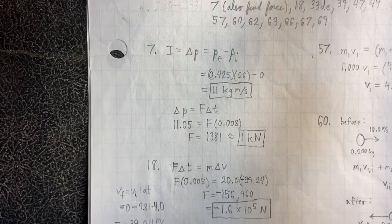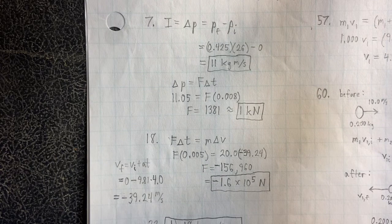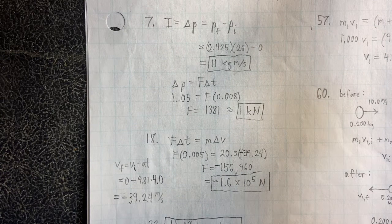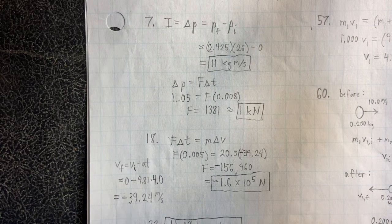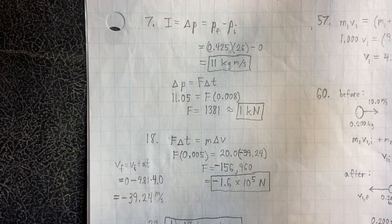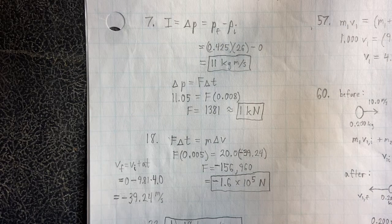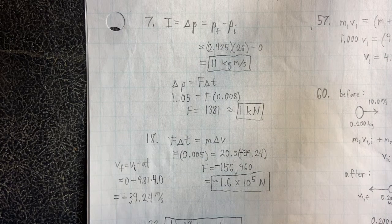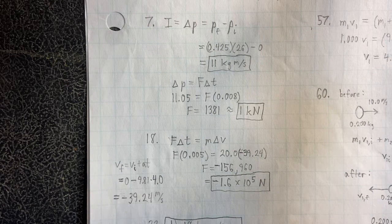Okay, number 18, we have impulse again. F delta T equals M delta V, and we're given the delta T, and we're also given the mass and the delta V, so we solve for the force, which is negative 1.6 times 10 to the 5th newtons.